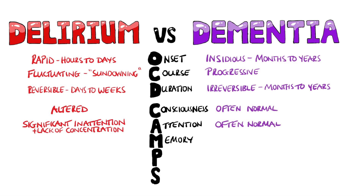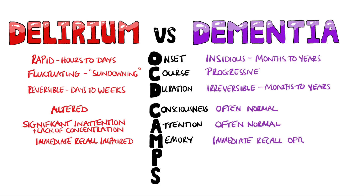M is for memory. In delirium, the immediate recall is usually impaired, while longer-term memory may be quite good. In dementia, however, the immediate recall is often normal.